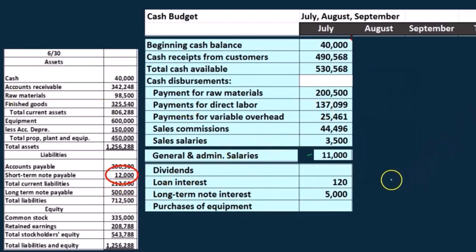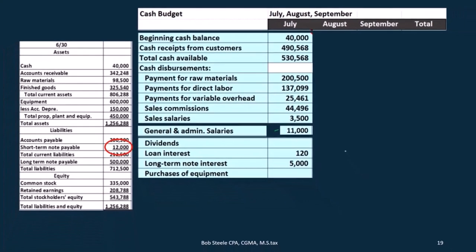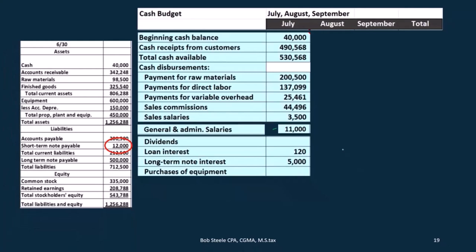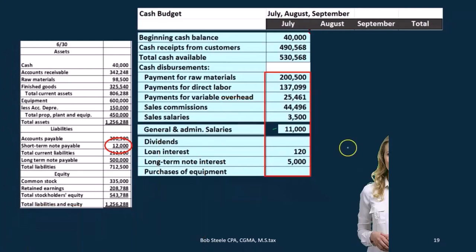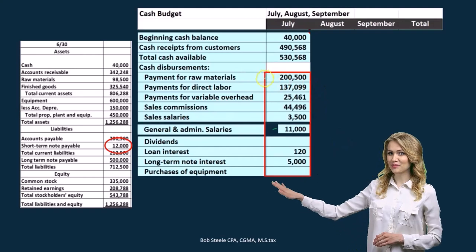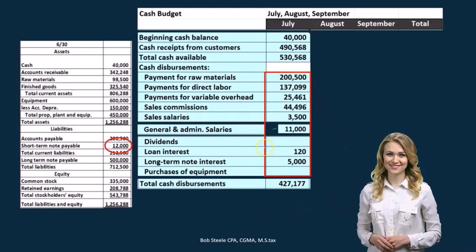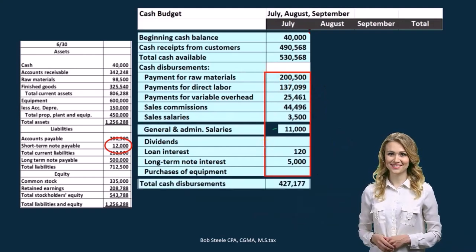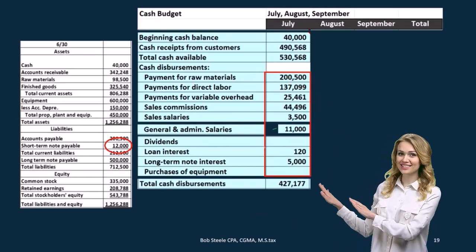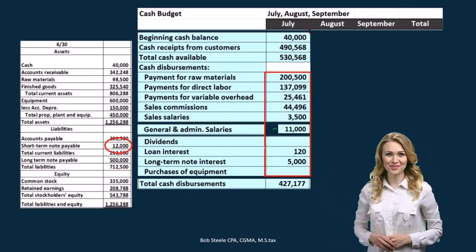For purchase of equipment, we don't have anything in July that we're estimating, but that's another thing to consider — are we purchasing equipment for cash? The cash portion of the equipment purchase would appear here; anything financed wouldn't be on the cash budget. If we add all of this up, we come out to total cash disbursements of $4,427.